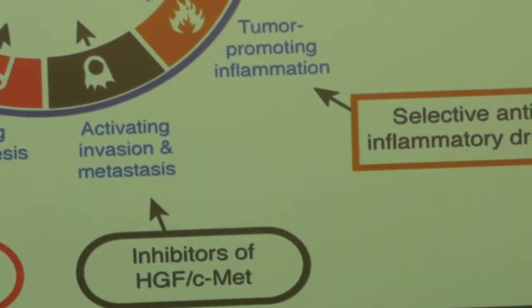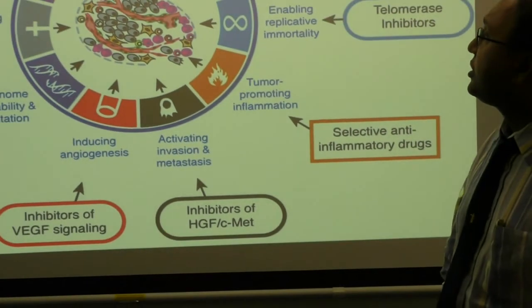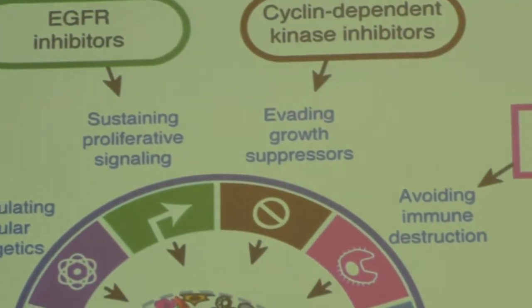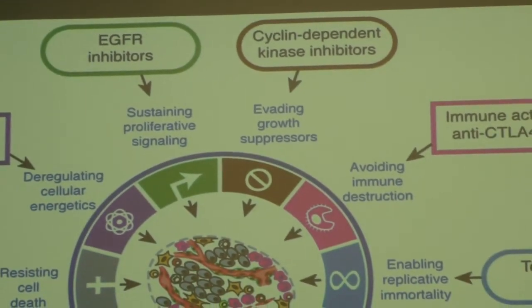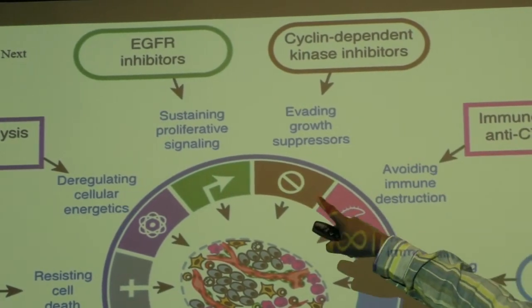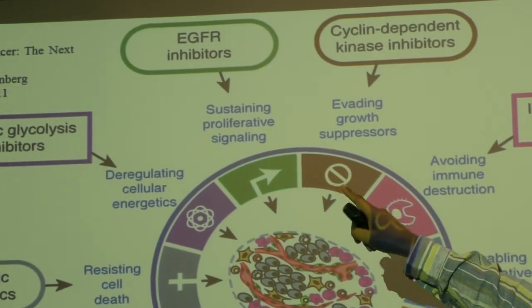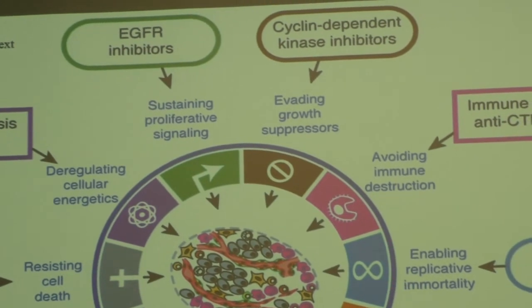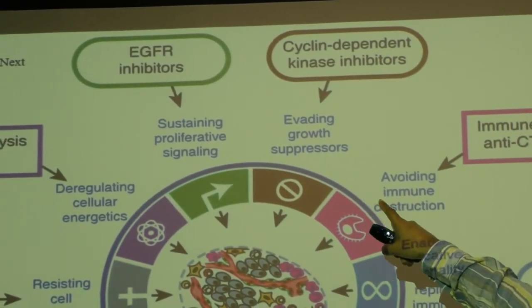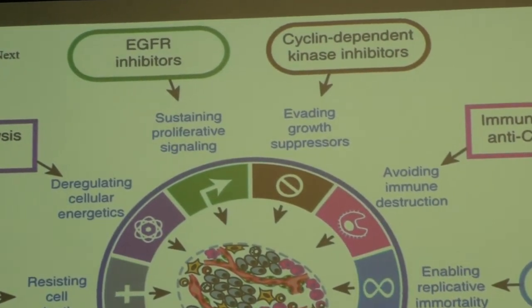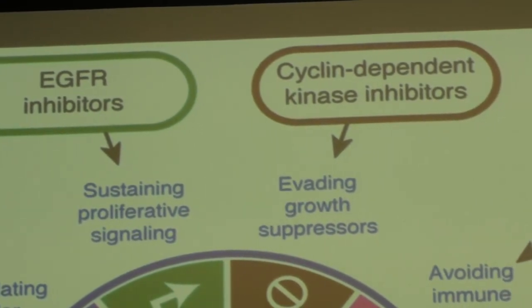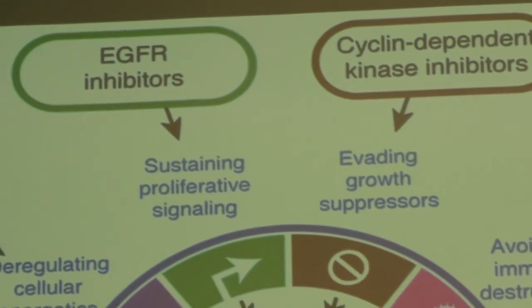EGFR inhibitors work at the cell membrane surface, and cyclin-dependent kinase inhibitors work at the cell cycle checkpoints. For today, I'm merely introducing these concepts so that you'll understand that there are so many areas — avoiding immune destruction, evading growth suppressors, sustaining proliferative signals. You'll see that the whole aim here is to make sure the cancer cell lives forever. And if there is a way of blocking at this level, then we can actually kill the cancer.